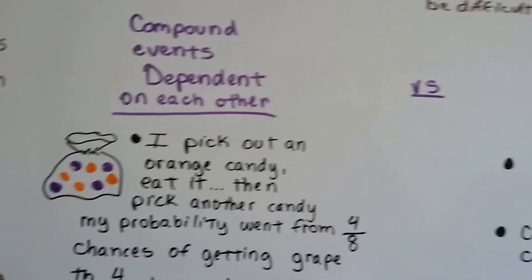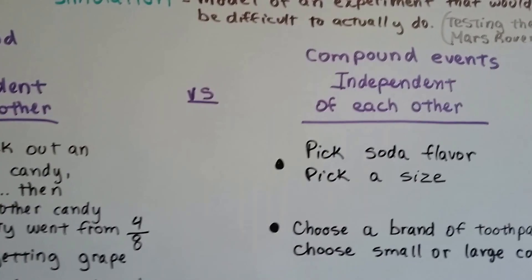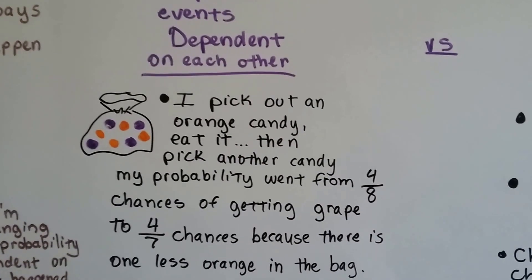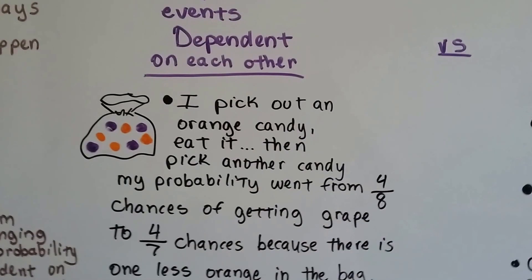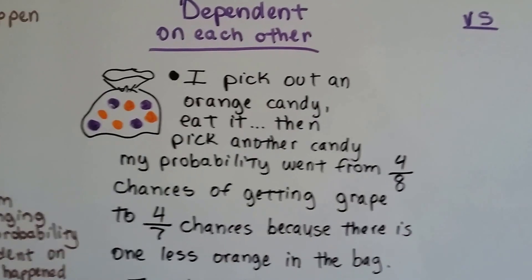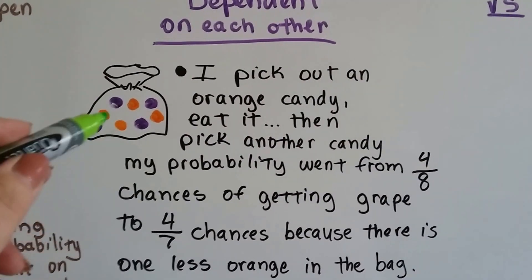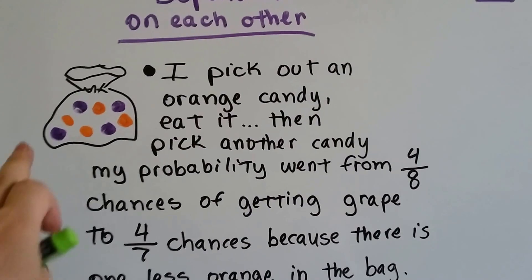We're going to show the difference between dependent and independent compound events. A dependent compound event, they're dependent on each other. Let's say I have a bag of eight pieces of candy, four orange and four grape, and I pick out an orange candy and I eat it.